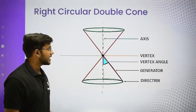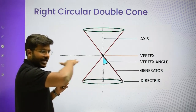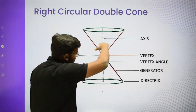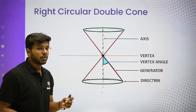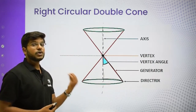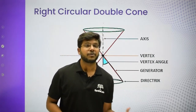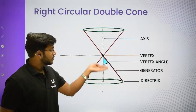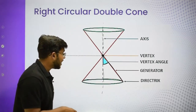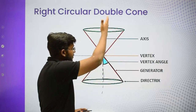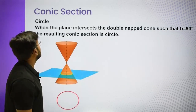Now, what happens if you take a plane and cut different sections of this double circular cone? You get different types of conic sections — circle, ellipse, parabola, hyperbola — depending on which plane you cut along the right circular double cone.